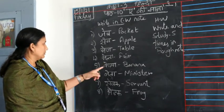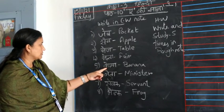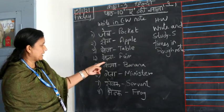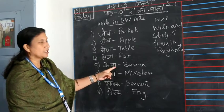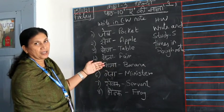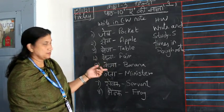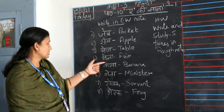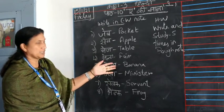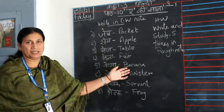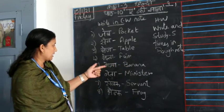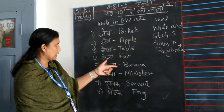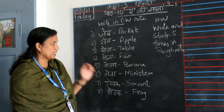The fifth one is 'Kela.' K-E-L-A. You pronounce it as Kela. Kela means a banana.